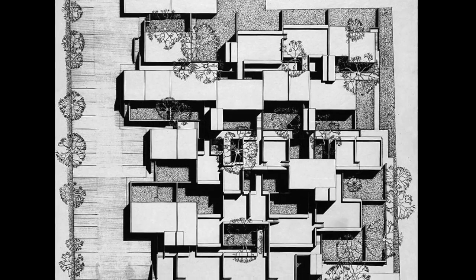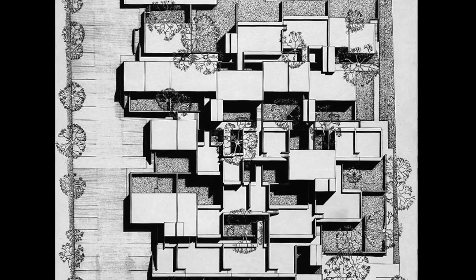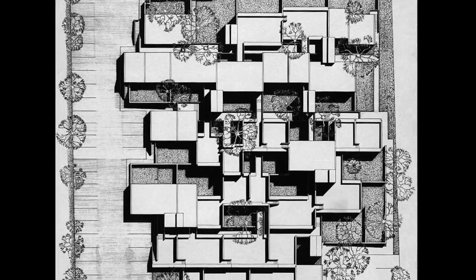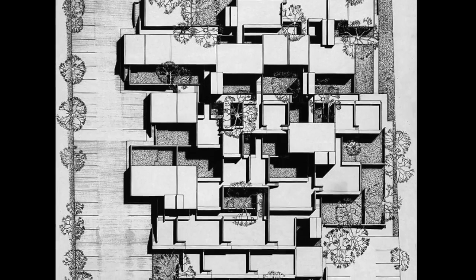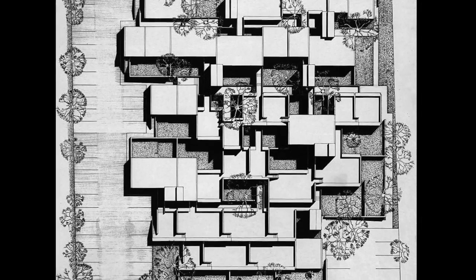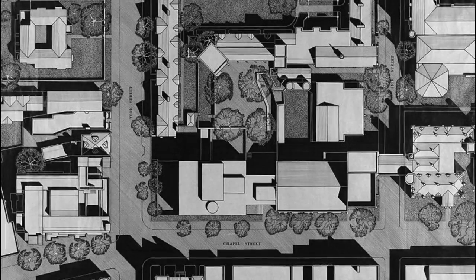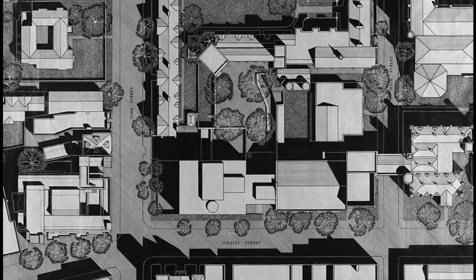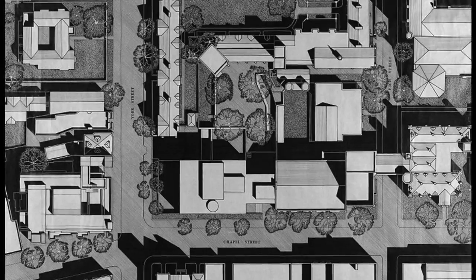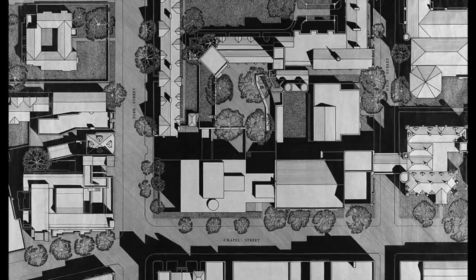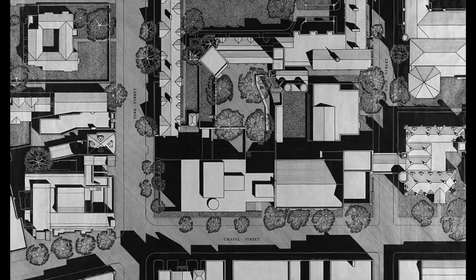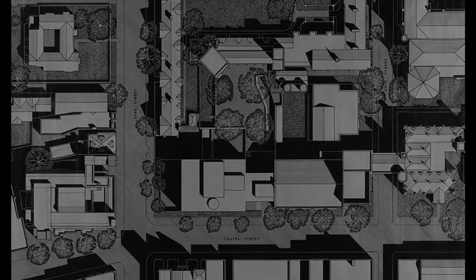The site plan represents the view of a property from above. It's used to dimensionally map the location of the buildings and features of a property. Areas of shadow and texture can be added to more clearly represent type, scale, and the height of objects.